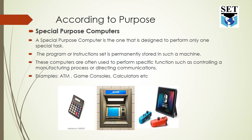Special purpose computers are often used to perform a specific function such as controlling a manufacturing process or directing communication. For example, in factories where manufacturing processes take place, specific computer systems are used to manage and control those processes.